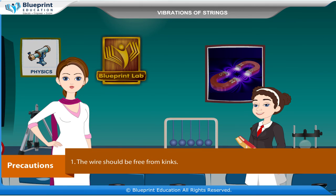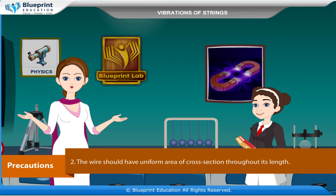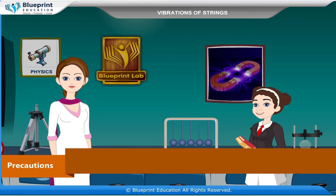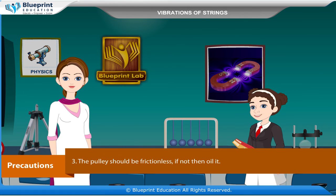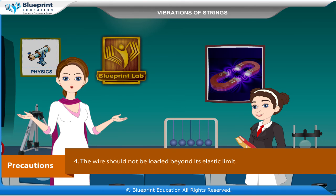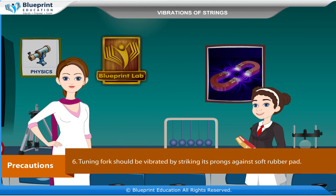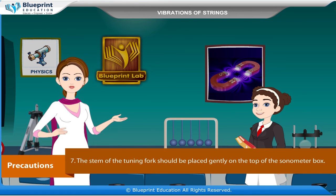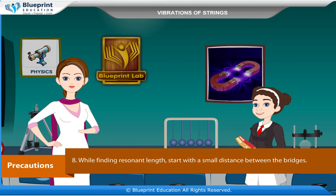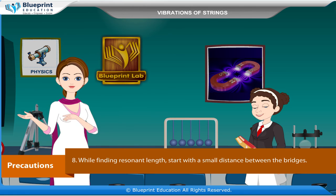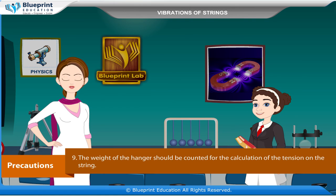Precautions: 1. The wire should be free from kinks. 2. The wire should have a uniform area of cross section throughout its length. 3. The pulley should be frictionless; if not, oil it. 4. The wire should not be loaded beyond its elastic limit. 5. The paper rider should always be kept in the middle of the wire between the bridges. 6. The tuning fork should be vibrated by striking its prong against a soft rubber pad. 7. The stem of the tuning fork should be placed gently on the top of the sonometer box. 8. While finding the resonant length, start with a small distance between the bridges. 9. The weight of the hanger should be counted in the calculation of tension in the string.